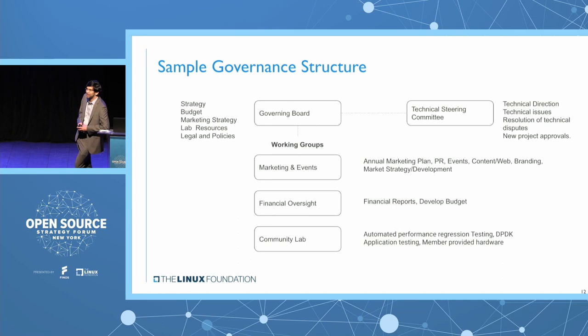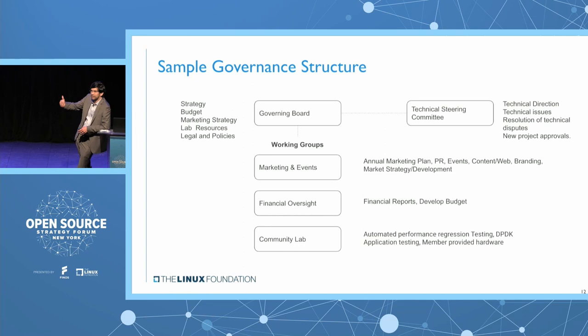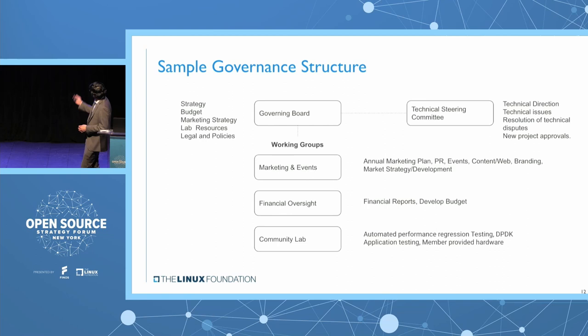What does this governance model look like for a well-run open source project? This is an example of a smaller-scale project, which has a governing board responsible for strategy and finances. A technical steering committee is given carte blanche on the technical direction of the project. TSC members could be from the governing board, but eventually it becomes a meritocratic process where developers serving on the TSC come up based on their merits and the contributions they made. Within that, you might have working groups for marketing, events, finance, and if you have a compliance program, you can build that out with community labs.